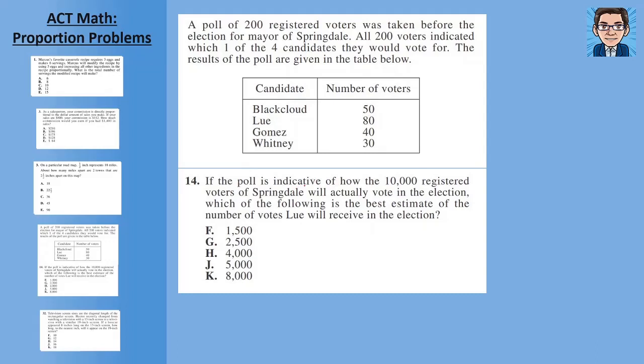All right. If the poll is indicative of how the 10,000 registered voters will actually vote, we want to find out how many would vote for Lou. In the poll, there was 200 voters, 200 people polled and Lou got 80. So we could set this up Lou and total. So Lou got 80 out of a total of 200. That's the first part of our proportion and we're going to set that equal to how many is Lou going to get out of 10,000.